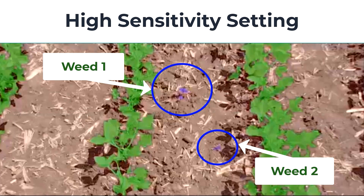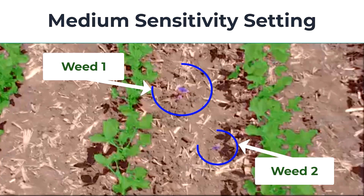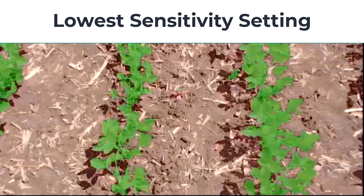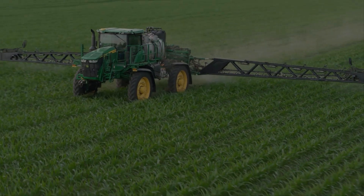As we decrease sensitivity to high, we can see the confidence threshold increase and we no longer identify the residue as a weed. At the medium sensitivity, we can see that the system now only detects the larger weeds. This difference between settings allows our customer to select whether they would like to only target weeds of a certain size. On a sensitivity of low, we can see the system is no longer identifying any of the weeds in the field. These sensitivities are best for targeting larger weeds in the field.